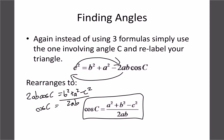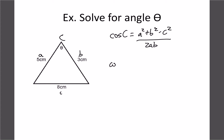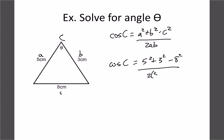This is the same cosine law formula, just solved for angle C instead of side c. Relabel the triangle so the angle you're looking for is always C. Then a and b can be in any order. The rearranged formula is: cos C = (a² + b² − c²) / 2ab.